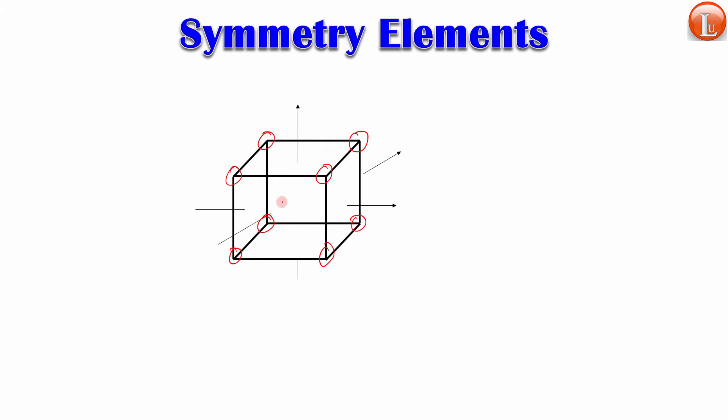Now let's go for body-centered cubic. If you again perform these three 90-degree rotation operations, you'll get a cube indistinguishable from the previous one. Then he tried face-centered cubic. Rotating the cube by 90 degrees through each of these axes, you again get the same face-centered arrangement as originally present.